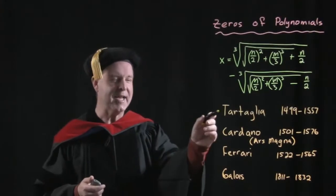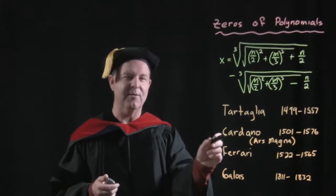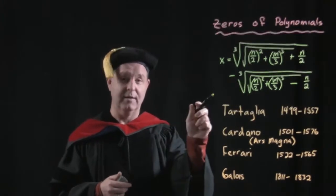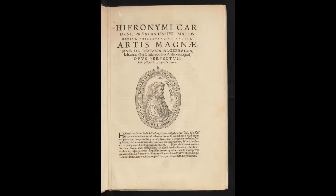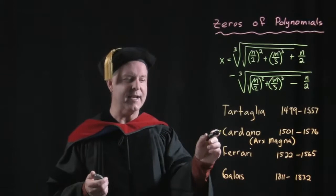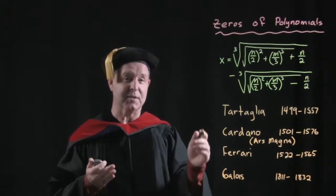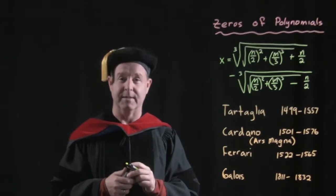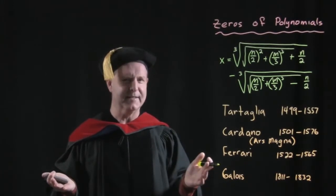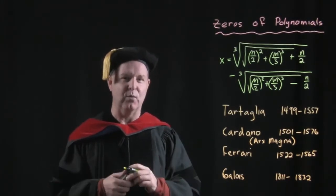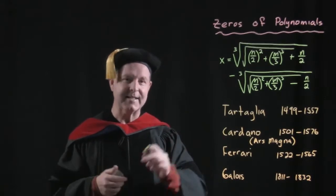A few years later, Tartaglia discovers that Cardano published that work as his own in his Ars Magna, a famous work at the time. And then a few years later, he got his famous student, Ferrari, to accuse Tartaglia of plagiarism. Wait a minute. That stinks because it was the other way around.